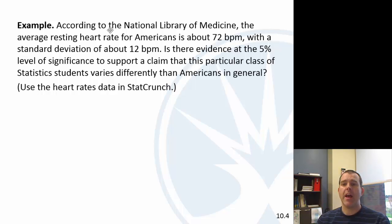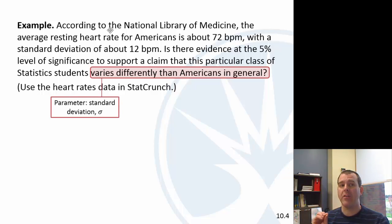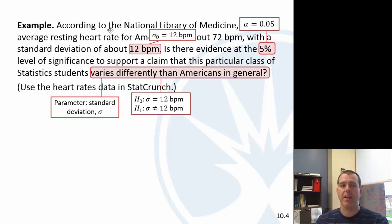So back to the National Library of Medicine — there's actually a known standard deviation from the National Library. What if we're wondering if this particular class's resting heart rates vary differently than Americans in general? The key here is that we're wondering if it varies differently, so the parameter is the standard deviation. We've got a known standard deviation, the status quo is the population, and we're asking: do they vary differently? So we're going to have a two-tailed test — we say the standard deviation is not equal to 12, at the 5% level of significance.